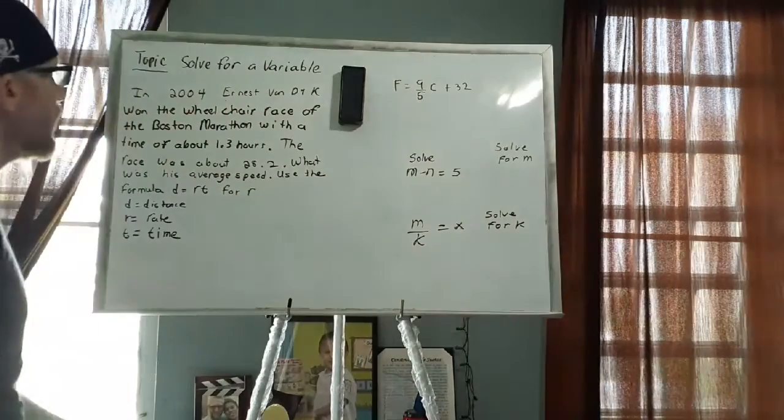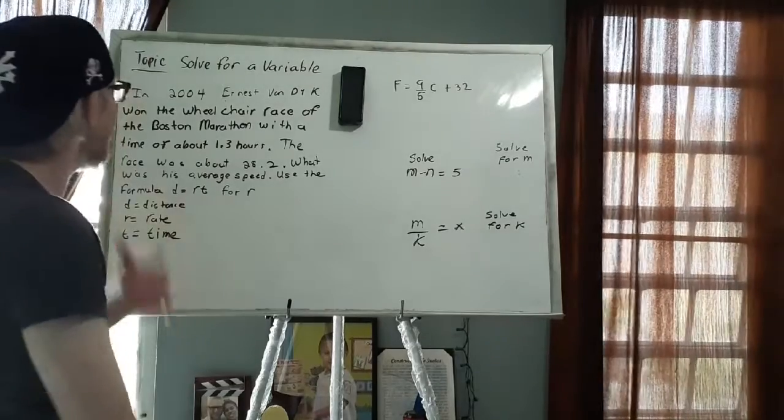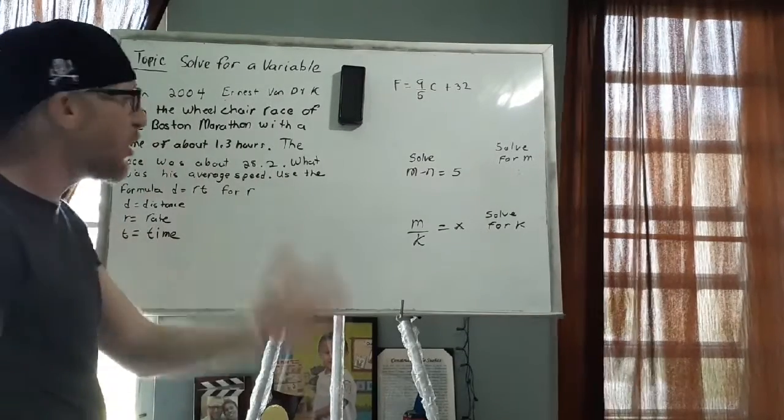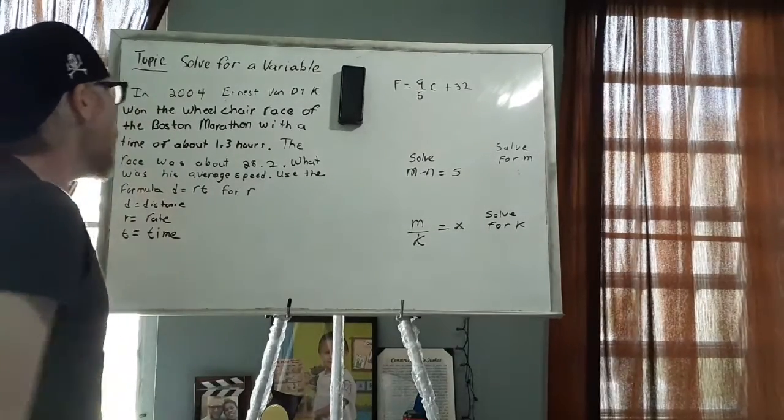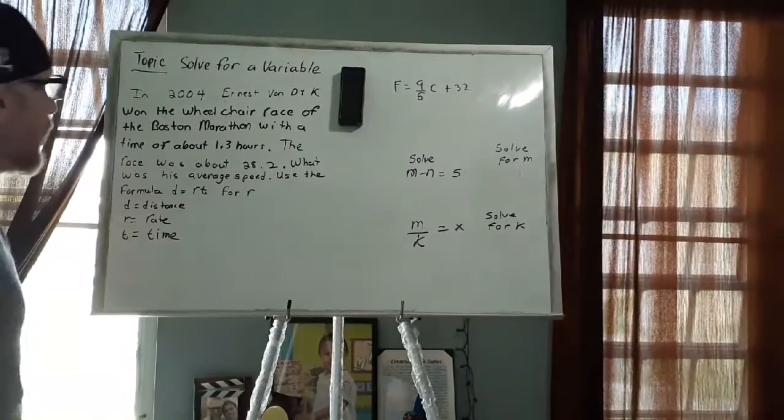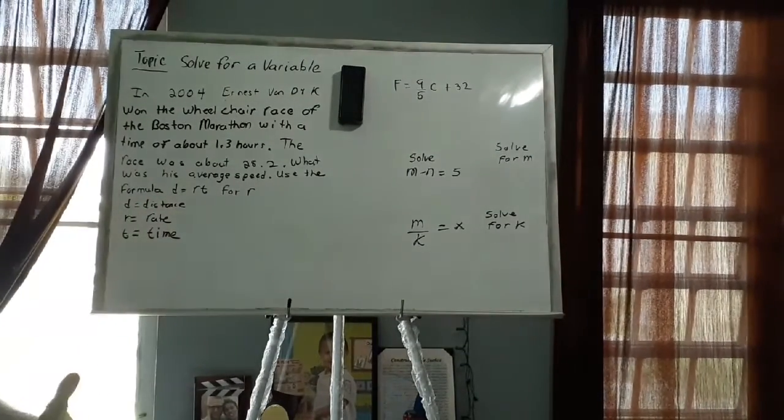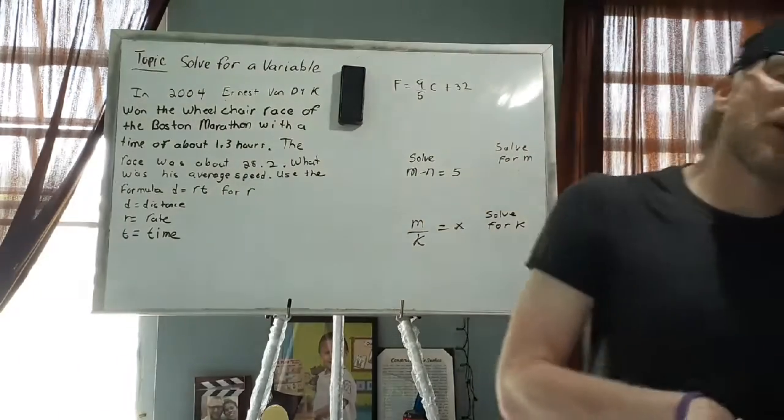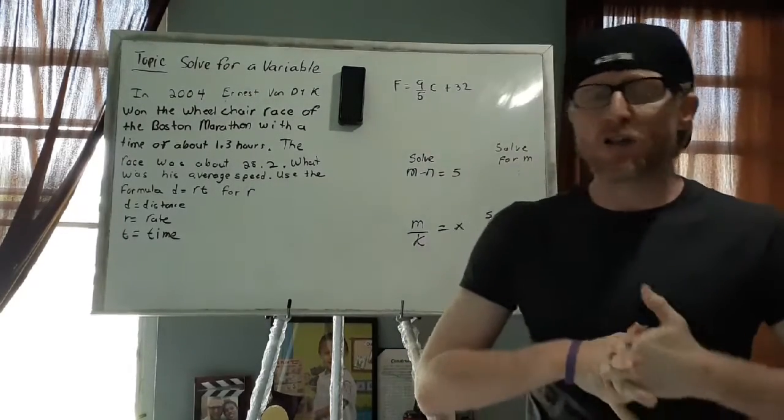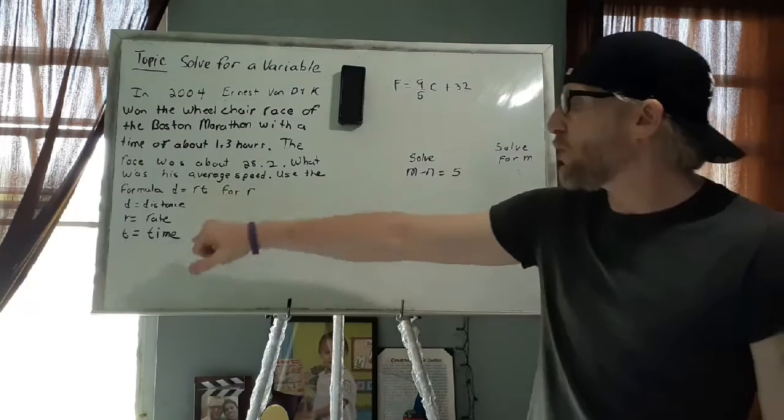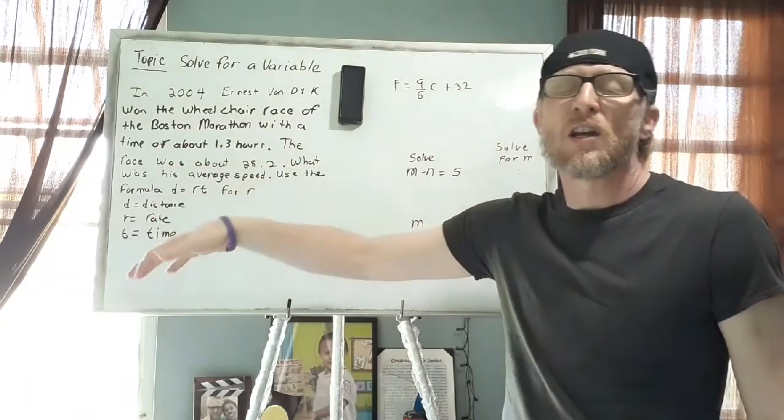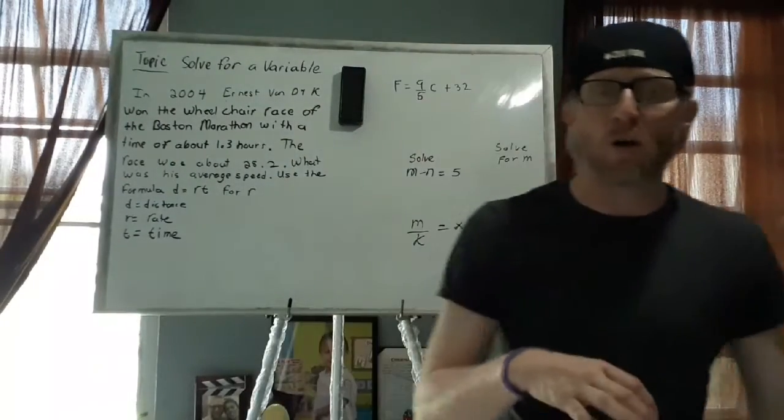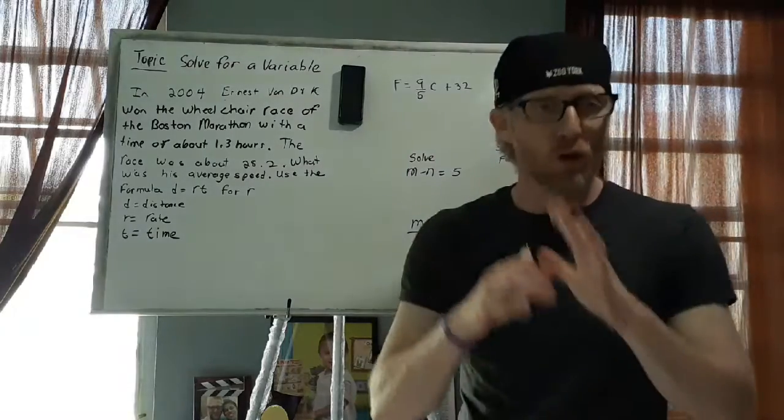It says in 2004, Ernest Van Dyke won the wheelchair race of the Boston Marathon with a time of about approximately 1.3 hours and since the race was about 28.2 miles long, what was his average speed? Use the formula D equals R times T and solve for R. Now, D equals R times T is a formula that is used to calculate speed or rate of change of speed and it's used a lot in physics and physical sciences. So what I did here is I broke down the formula, explaining what each one means.